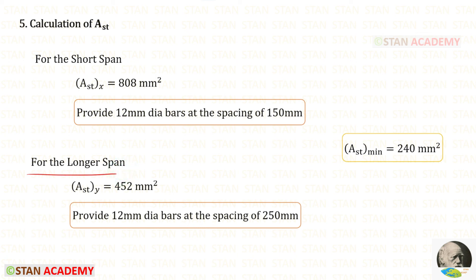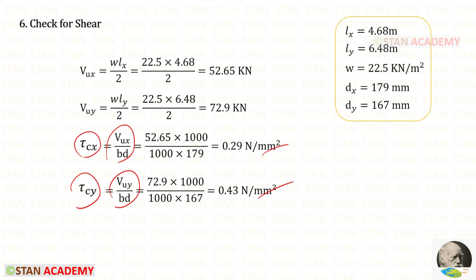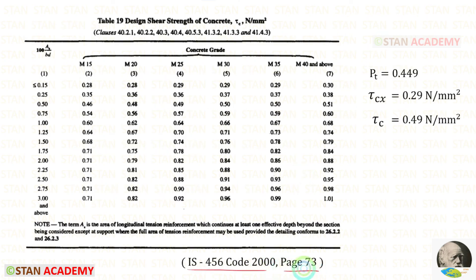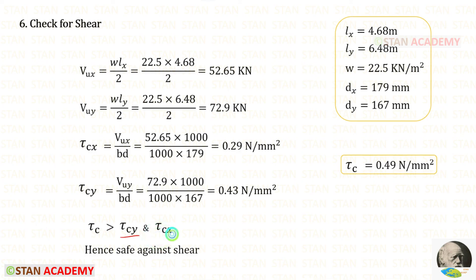For the long span, diameter and spacing checks are also satisfied. Now applying the shear check: we find the shear force in both directions and calculate shear stress using the respective formulas. From IS 456:2000, page 73, for Pt = 0.449% (≈ 0.5%) and M25 grade concrete, the permissible shear stress τc = 0.49 N/mm². The nominal shear stresses in both spans are less than τc, so the slab is safe against shear.